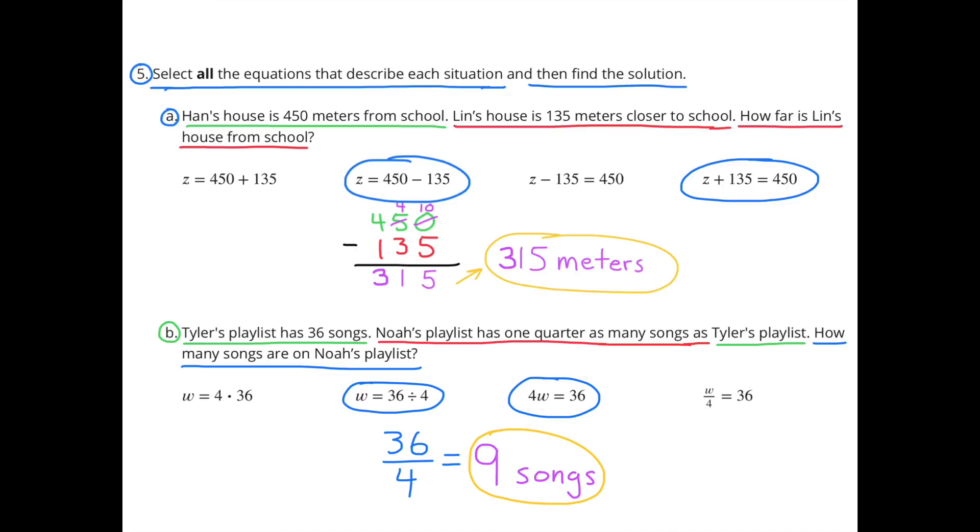How far is Lynn's house from school? I selected Z equals 450 minus 135. And I selected Z plus 135 equals 450. 450 minus 135 equals 315. So Lynn's house is 315 meters away from school.